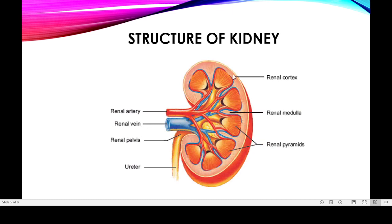The kidney has a concave shape on its inner side and a convex shape on its outer side. The concave inner side forms a depression called the hilum. The hilum is the region where the ureter enters, and where the renal artery and renal veins also enter — it is the position where different blood vessels and the ureter enter the kidney.